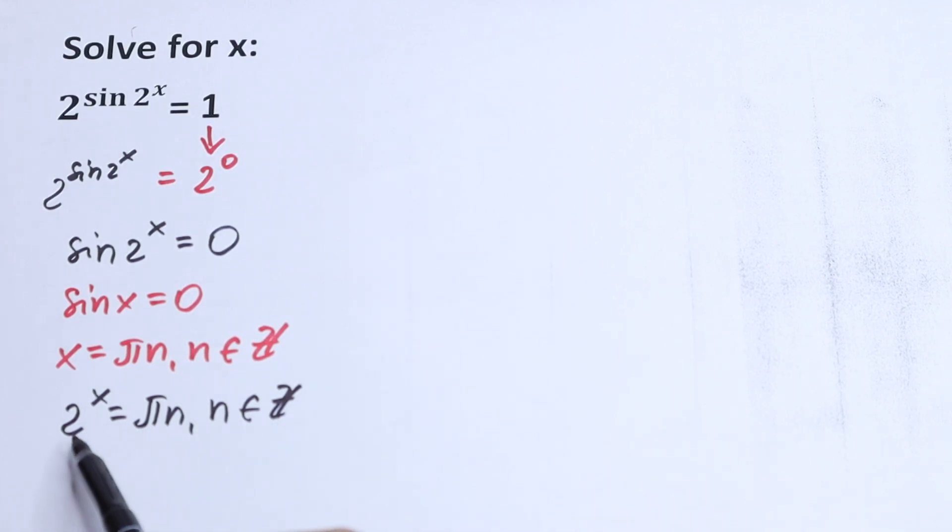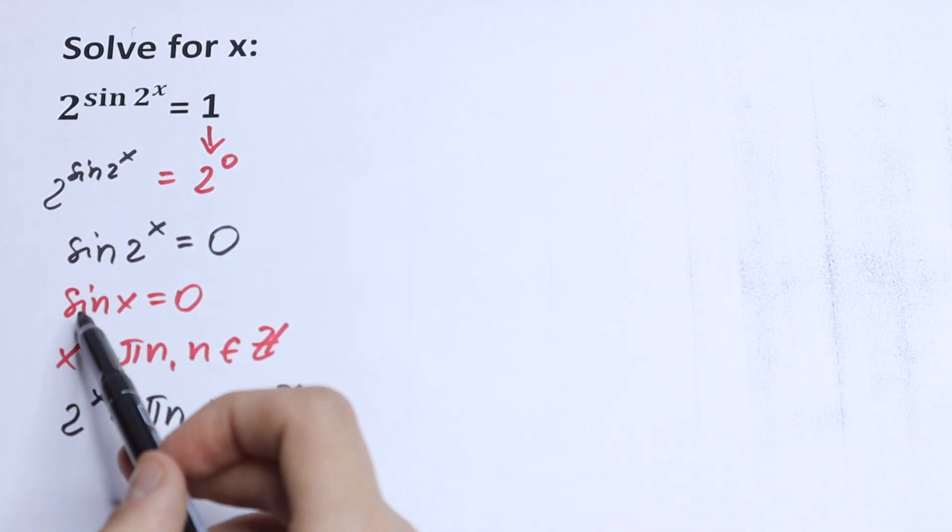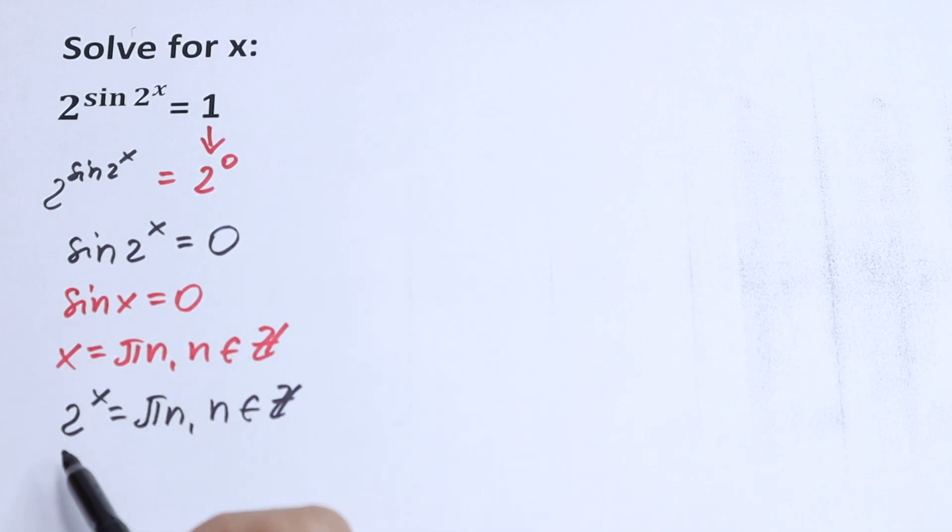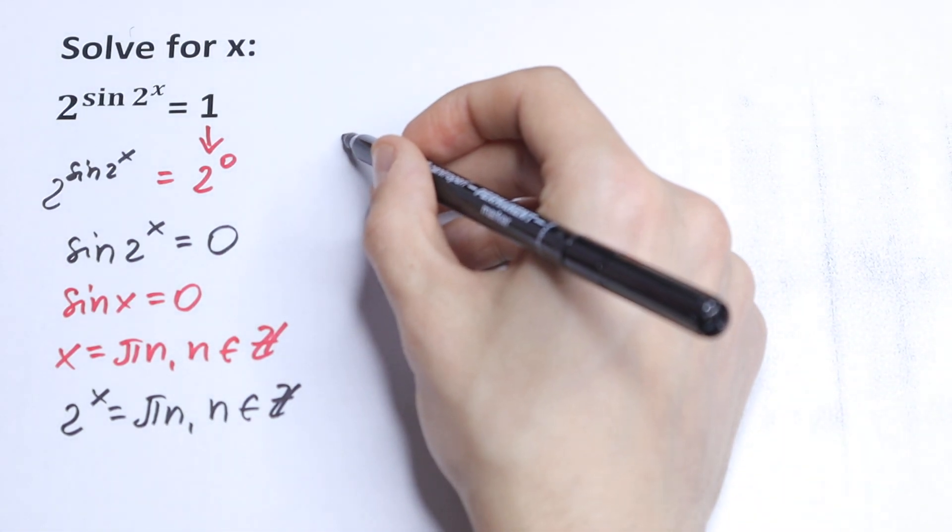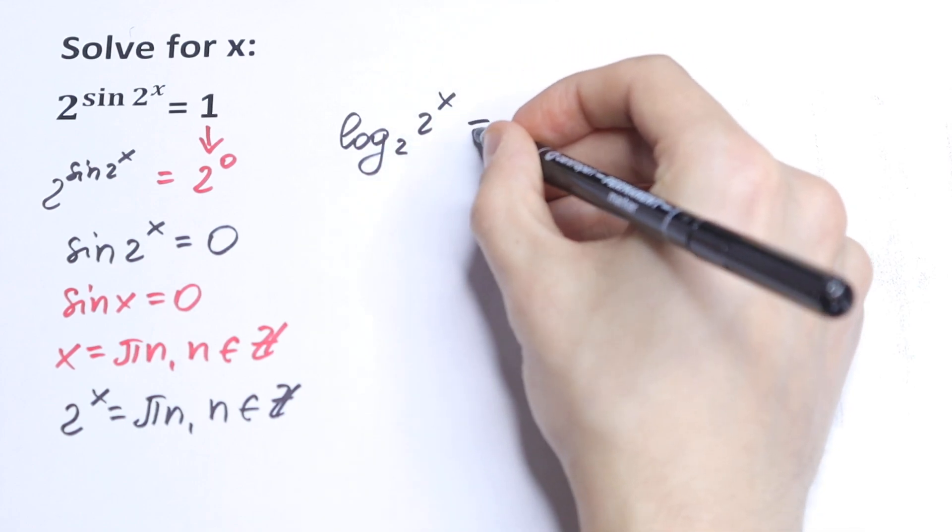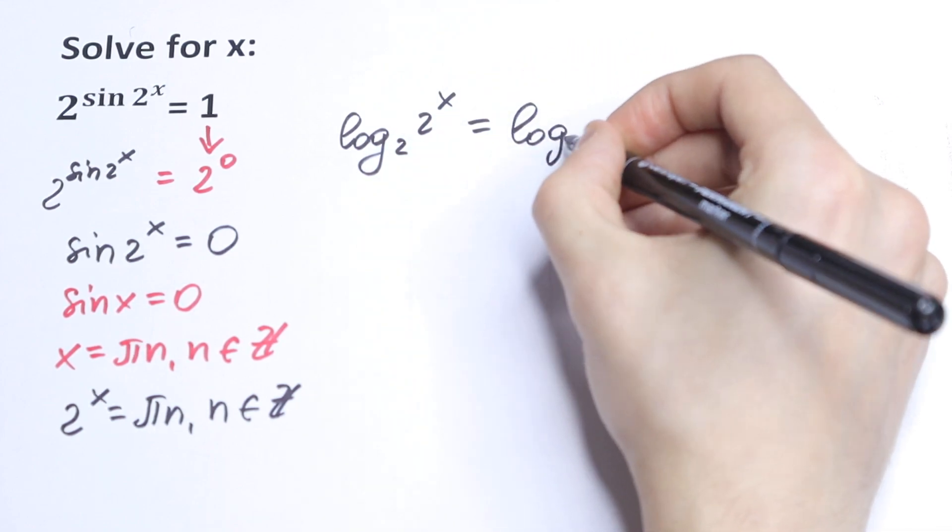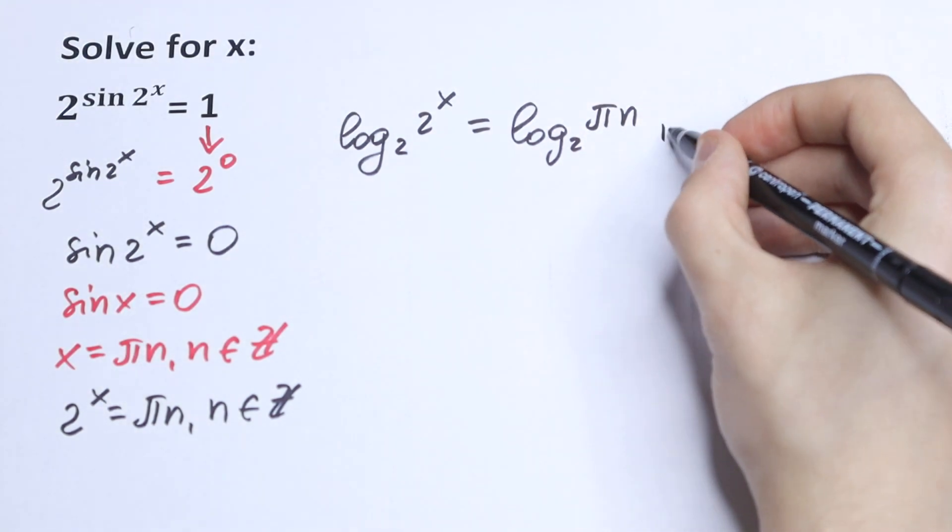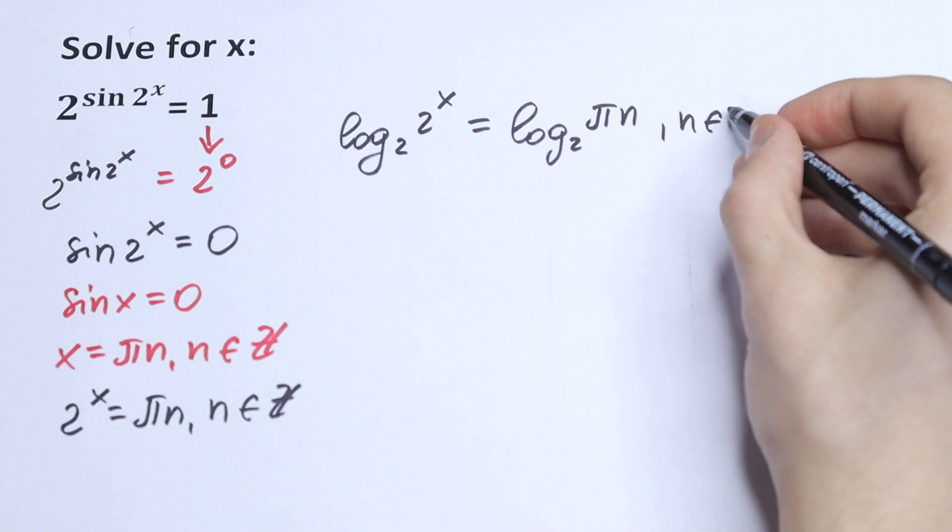Okay, nothing changed, nothing hard. Just use a rule right here, a table case. And what we're going to do next? Of course, let's take log base 2 from the left and from the right. So we will have log base 2 of 2^x, and on the left log base 2 of πn, n is set of whole numbers.